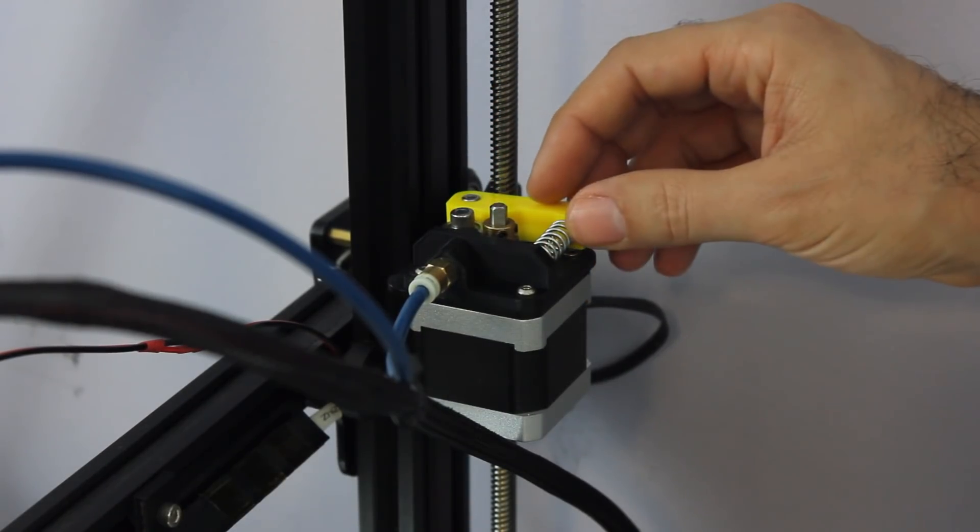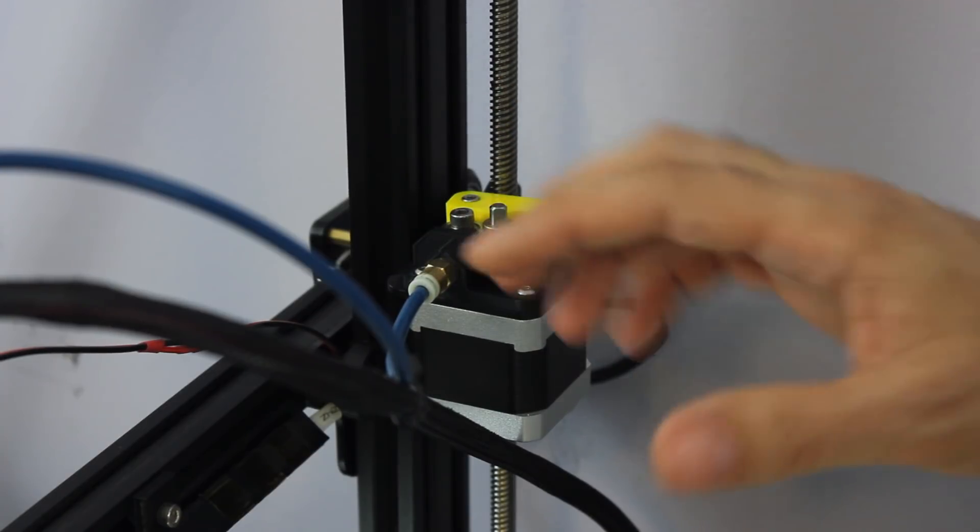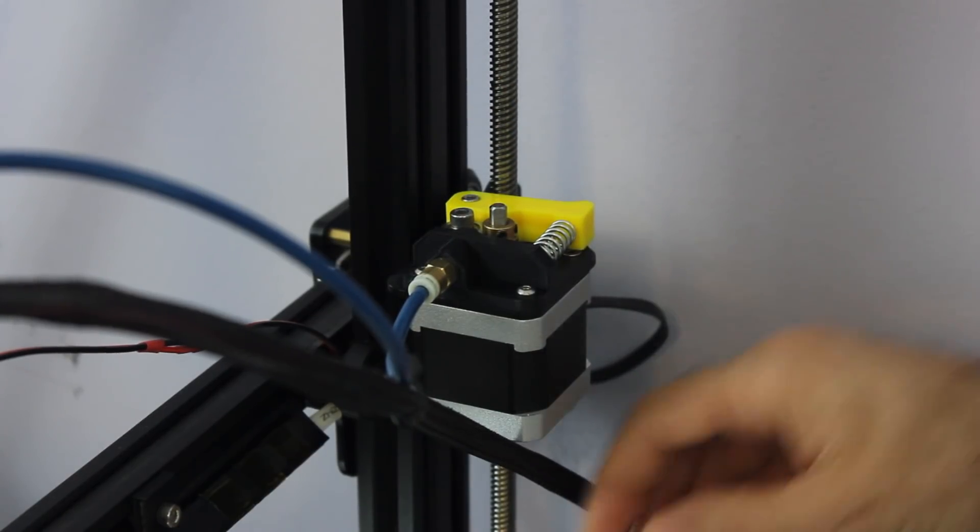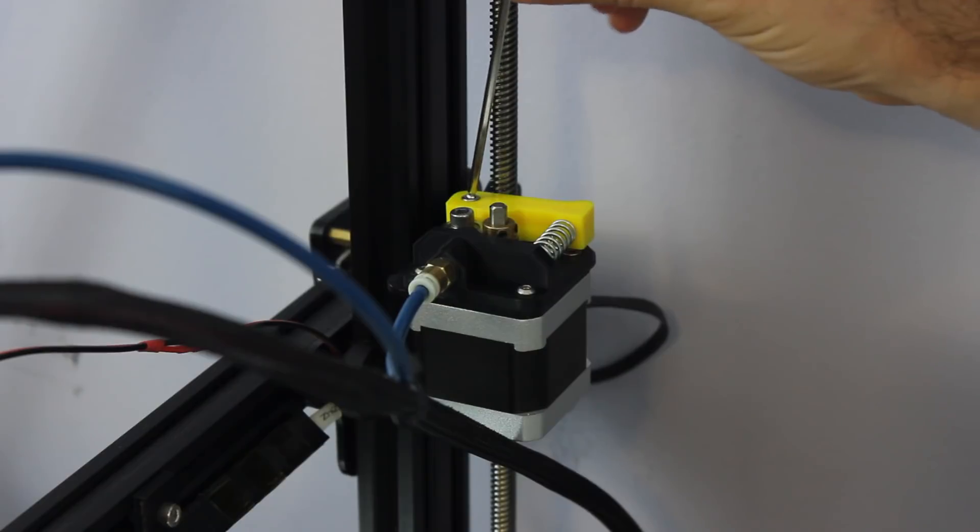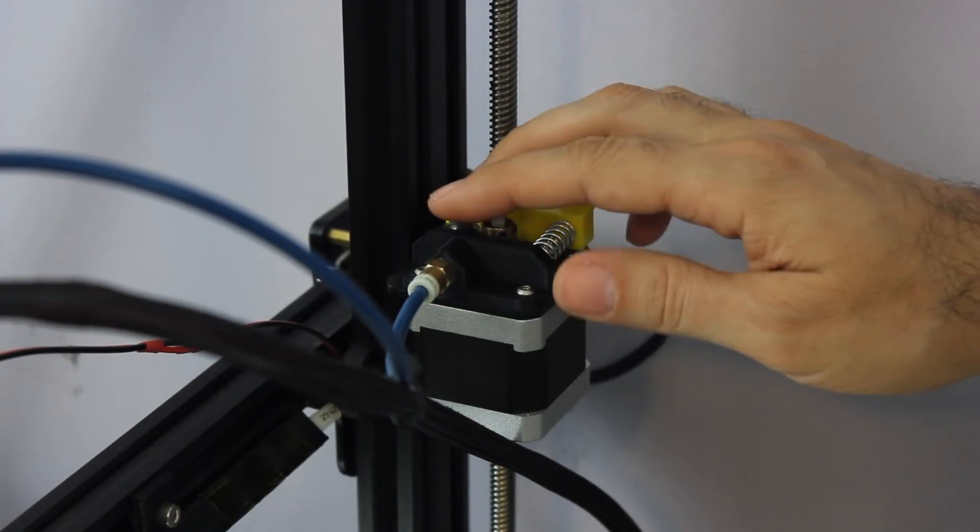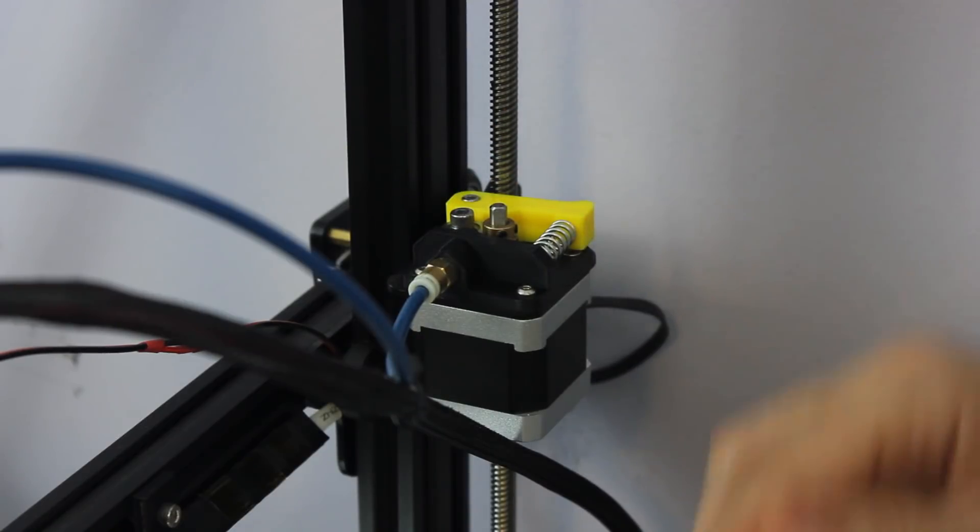It wasn't enough that I could see it doing it or hear it, but it was enough that it was showing up on the models. So all I did was I tightened this screw back up, and then on the next model that I printed, I noticed that there was no under-extrusion.